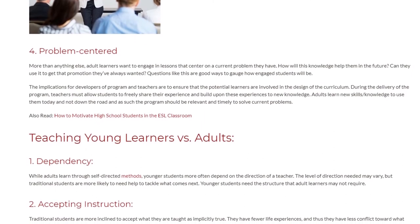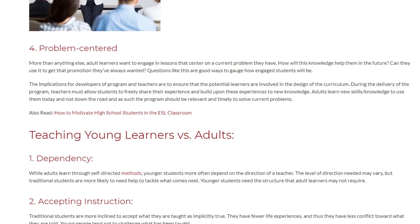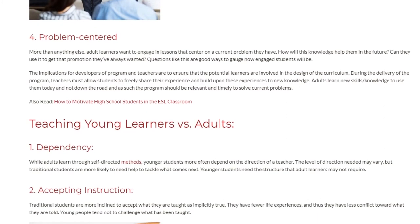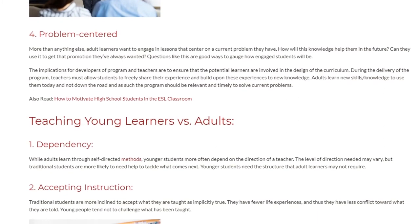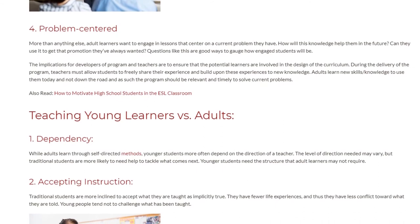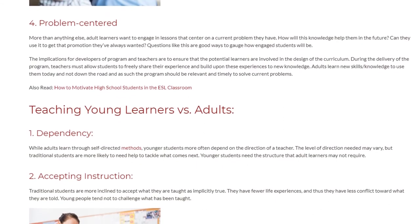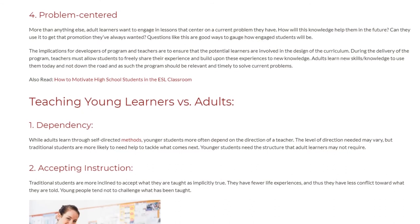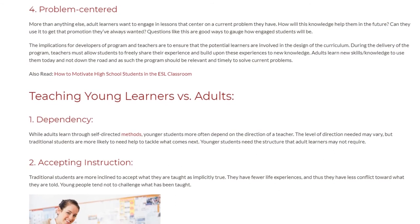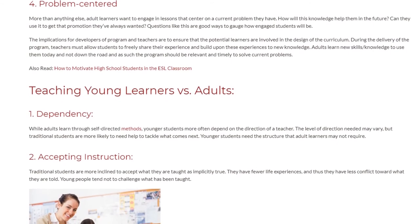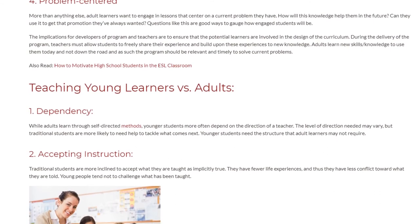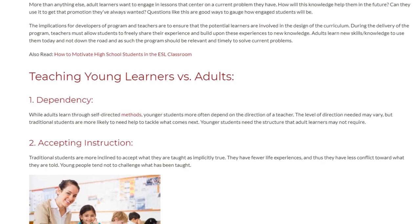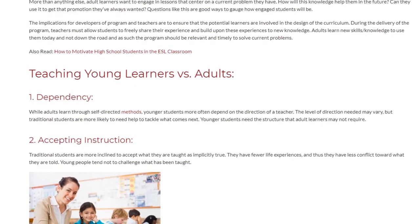Teaching young learners versus adults. The first difference is dependency. While adults learn through self-directed methods, younger students more often depend on the direction of a teacher. The level of direction needed may vary, but traditional students are more likely to need help to tackle what comes next. Younger students need the structure that adult learners may not require.